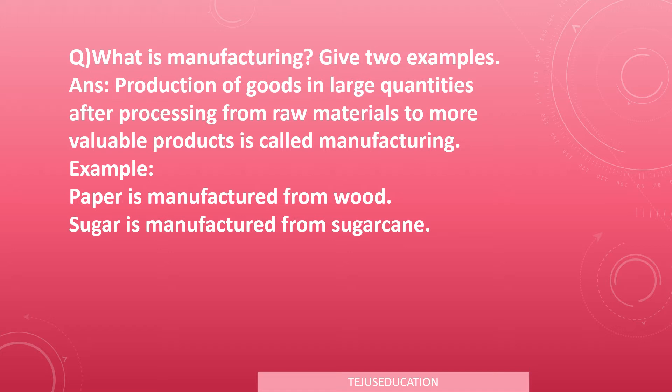Production of goods in large quantities after processing from raw materials to more valuable products is called manufacturing. For example, imagine a farmer has large fields of sugarcane. He sells the sugarcane to an industry owner, where it is processed with the help of machines and many hired workers.